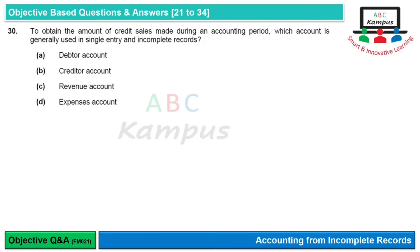Question 30: To obtain the amount of credit sales made during an accounting period, which account is generally used in single entry and incomplete record? Credit sales हम customers को करते हैं, उनसे related account — receivable account or debtor account — बनाते हैं। तो option A would be correct।